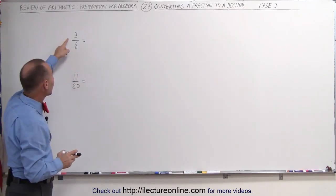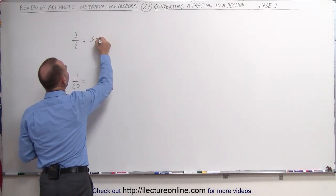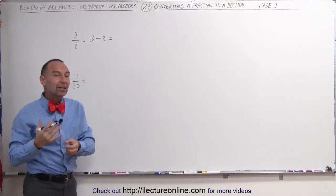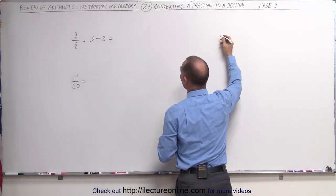You have to realize that when you have 3 over 8, that really means 3 divided by 8. In other words, we can do a longhand division and get the decimal that way. So let's do that.